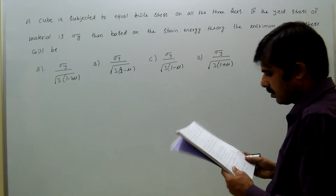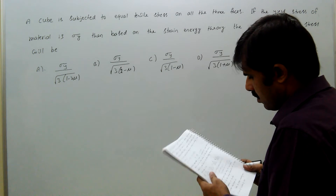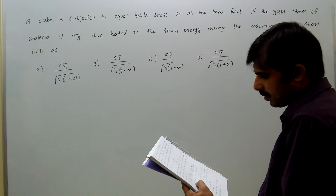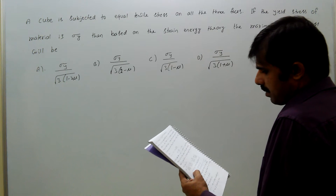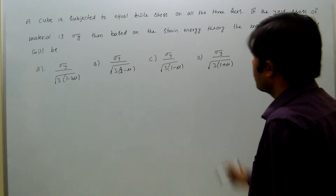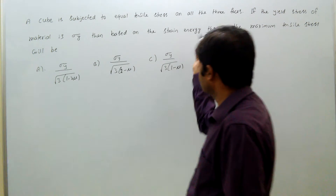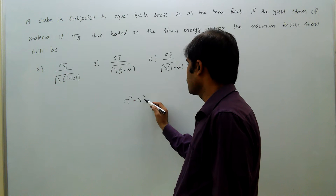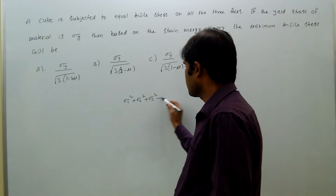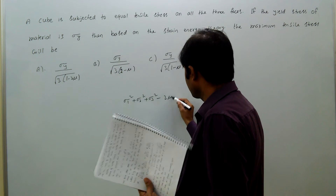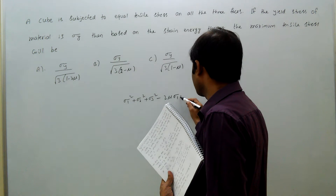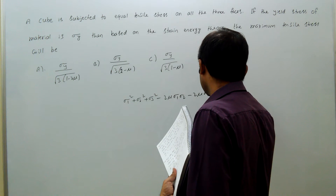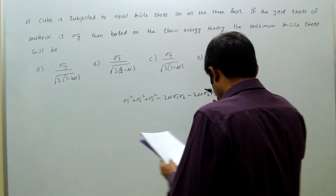According to the strain energy theory, the governing equation is: sigma_1^2 + sigma_2^2 + sigma_3^2 - 2*mu*(sigma_1*sigma_2) - 2*mu*(sigma_2*sigma_3) - 2*mu*(sigma_3*sigma_1) = sigma_y^2.